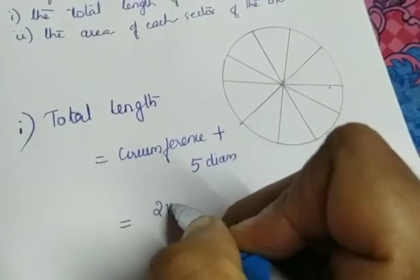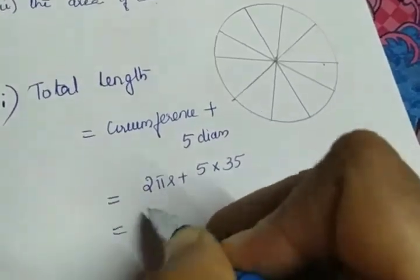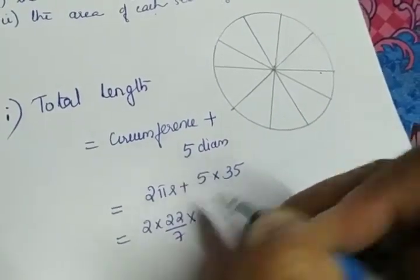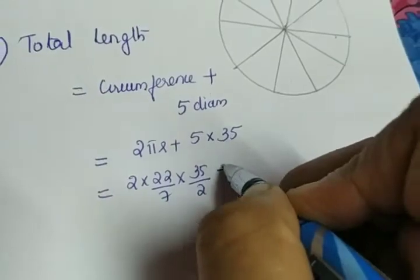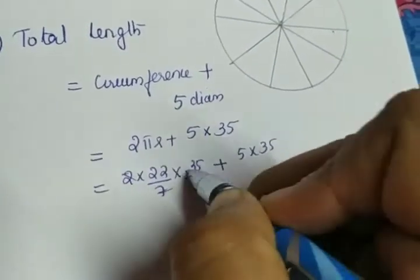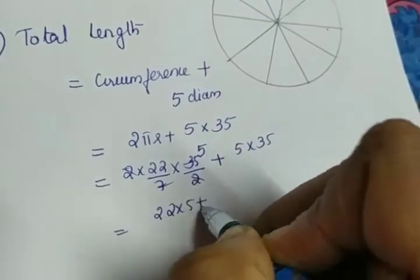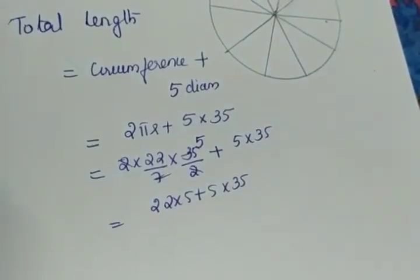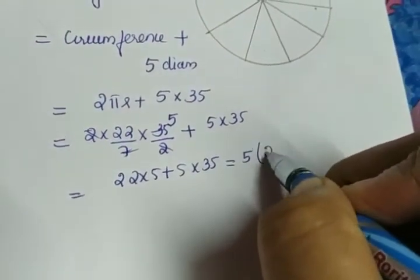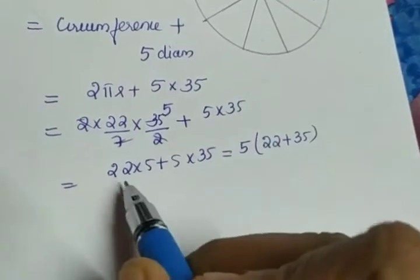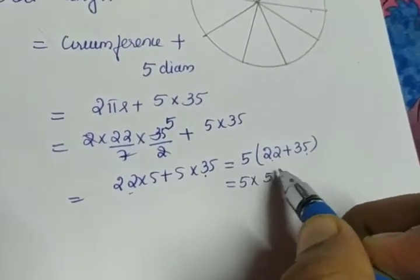Circumference formula is 2πr, so total length = 2πr + 5 × diameter. That is 2 × (22/7) × (35/2) + 5 × 35. The 2 cancels, 7 cancels giving 5, so we get 22 × 5 + 5 × 35. Taking 5 as common: 5 × (22 + 35) = 5 × 57.